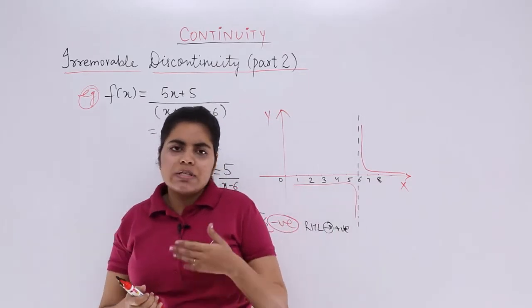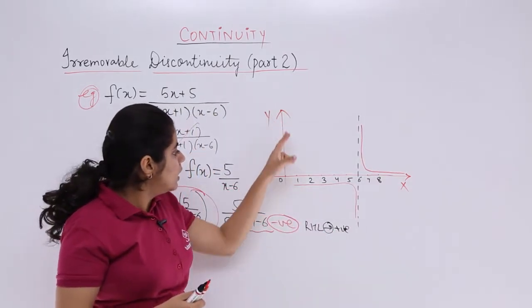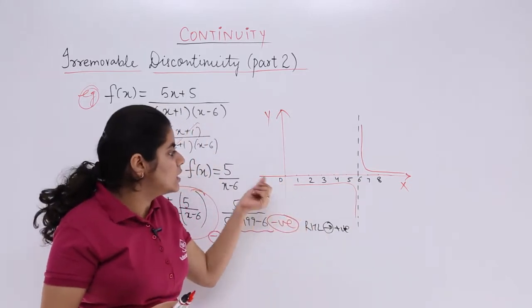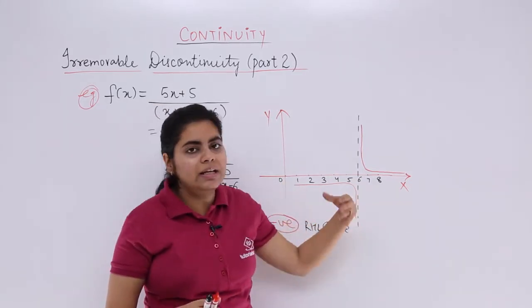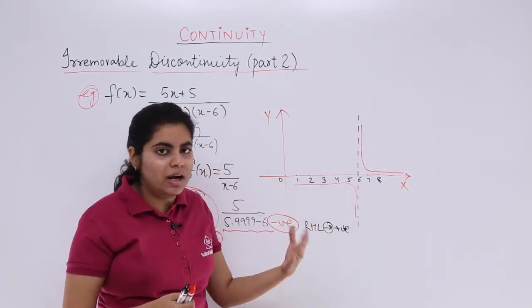The other thing, if we see graphically, this is y-axis, this is x-axis, we have 0, 1, 2, 3, 4, 5, 6, 7, 8 actually drawn and pointed for our convenience.